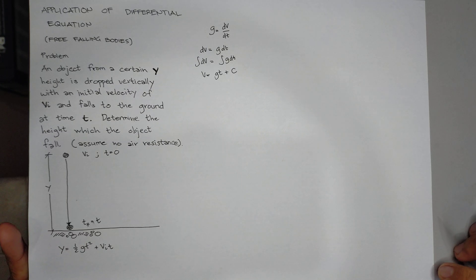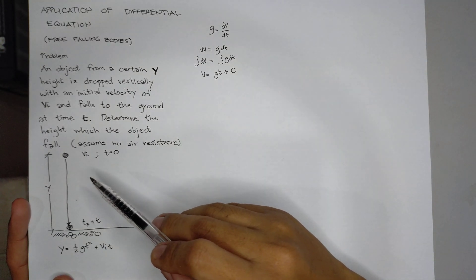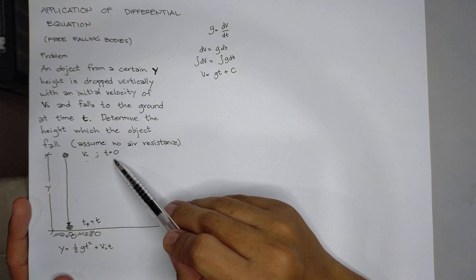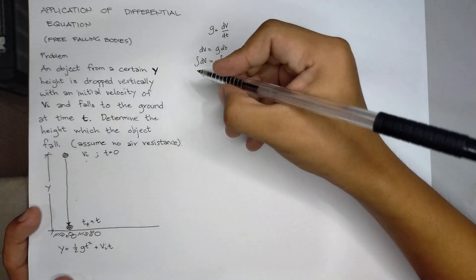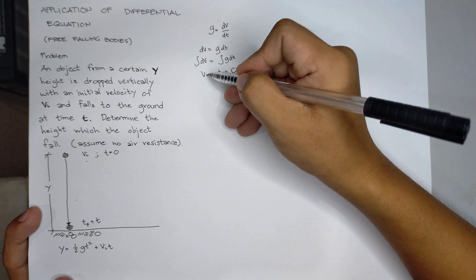c should be determined according to parameters. From the figure, we have the initial velocity when time is 0. So when time is 0, velocity is vi.